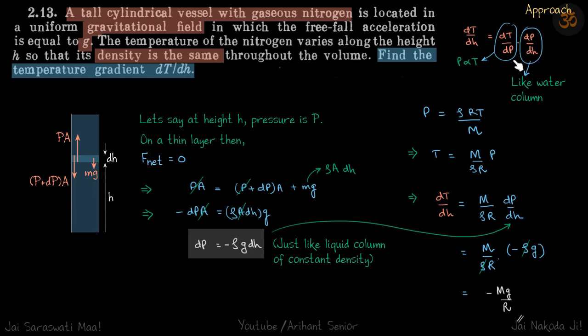Now dT by dP we can relate because we know pressure is proportional to temperature, and dP by dH we'll just think of it as like a water column. So just like we have a liquid inside a cylinder and how the pressure varies with height, similar approach we can use for the gas as well.